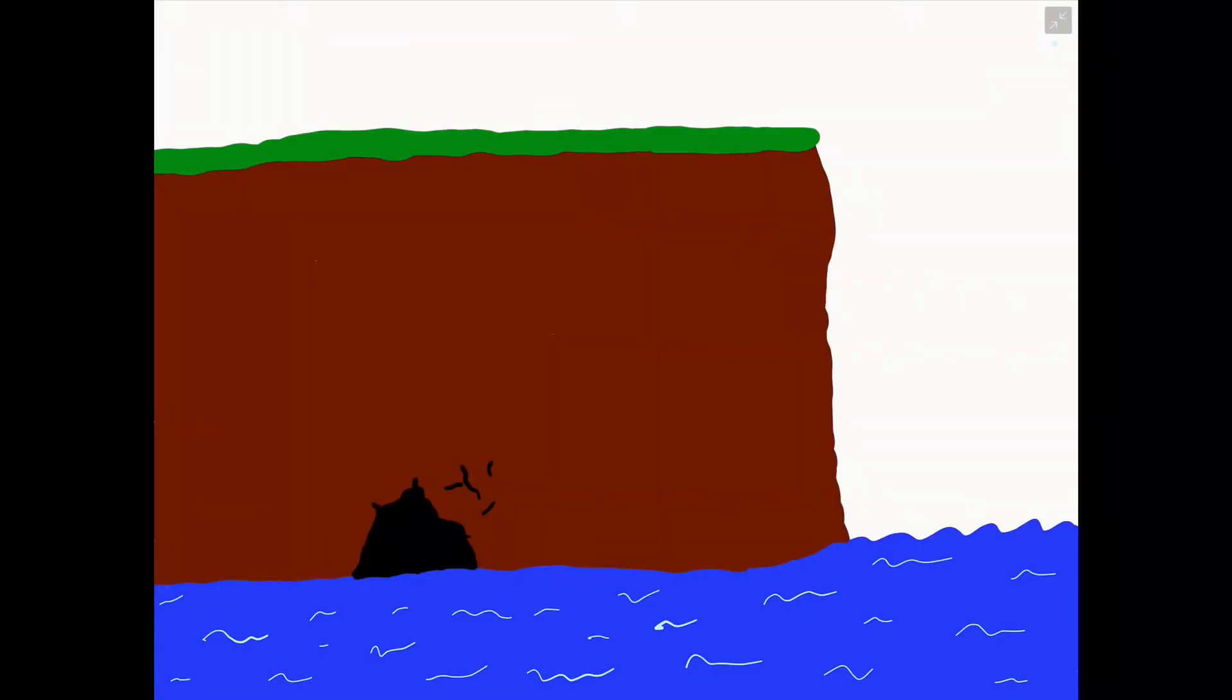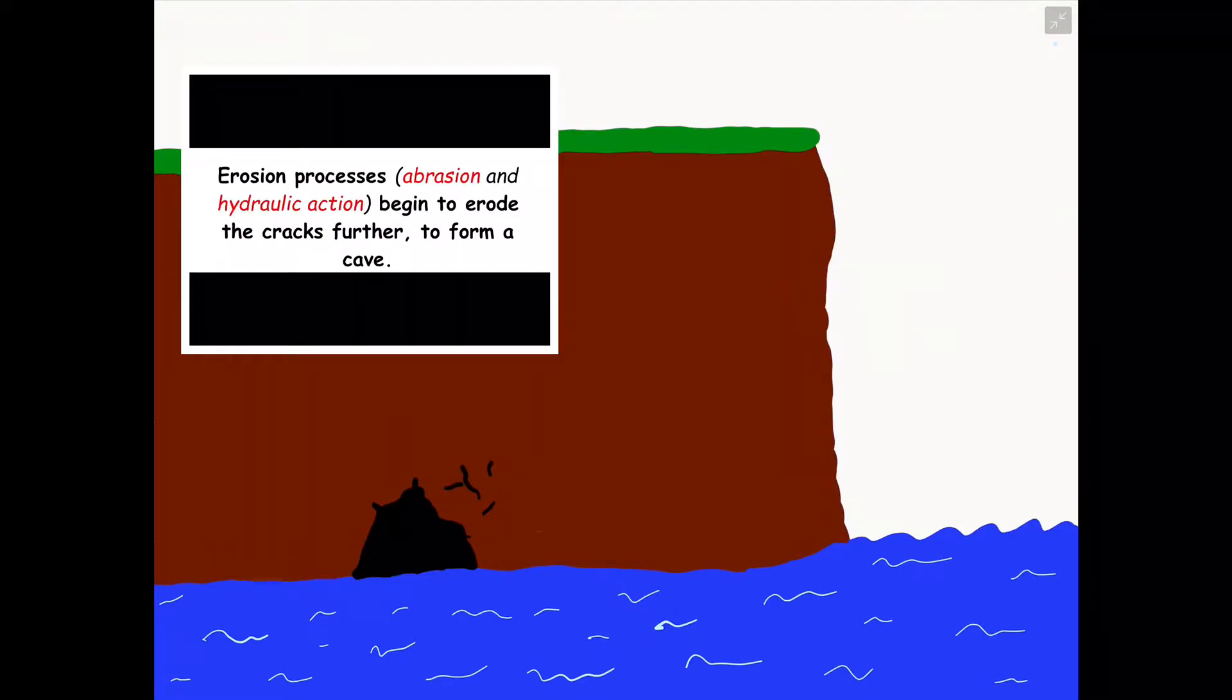Step two is then when these erosional processes, again, abrasion and hydraulic action, begin to erode the cracks further and exposing further weakness or faults in the headland to form a small cave.